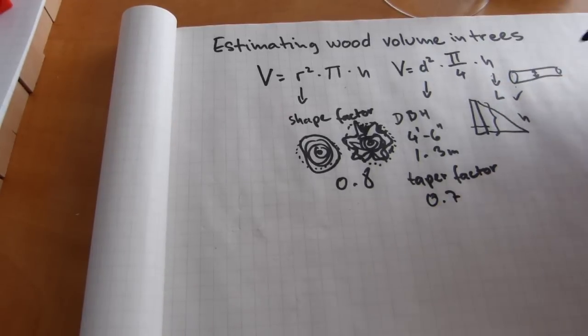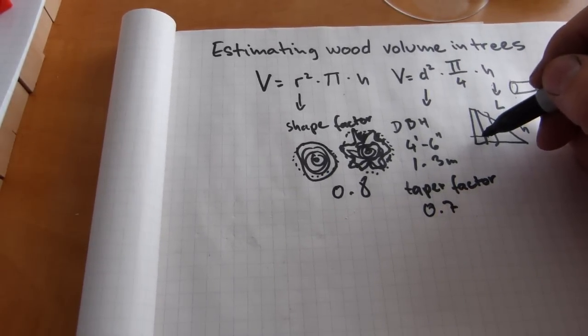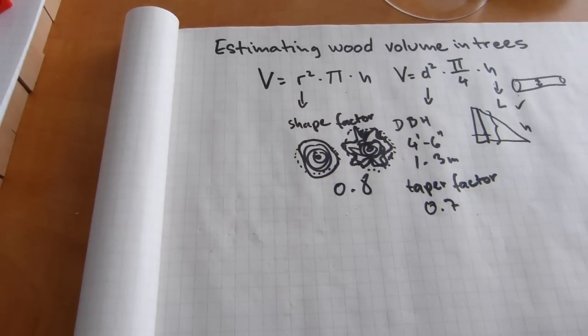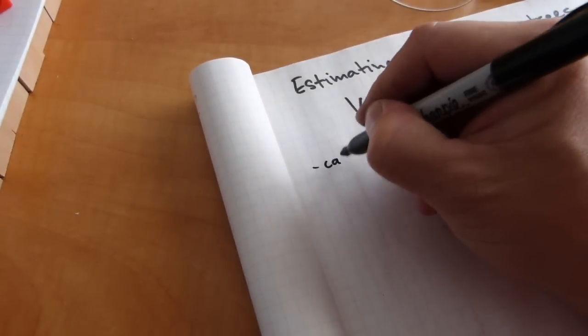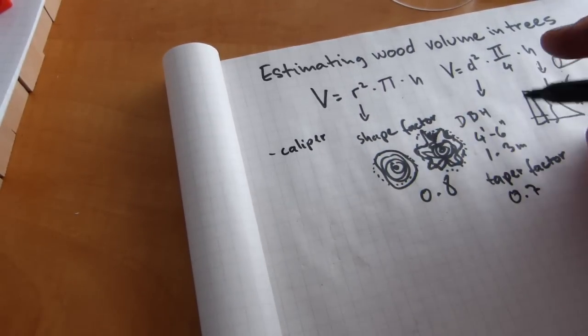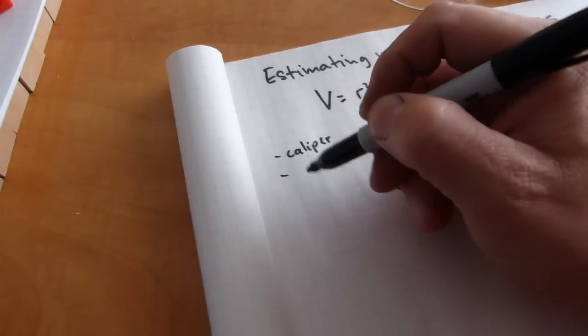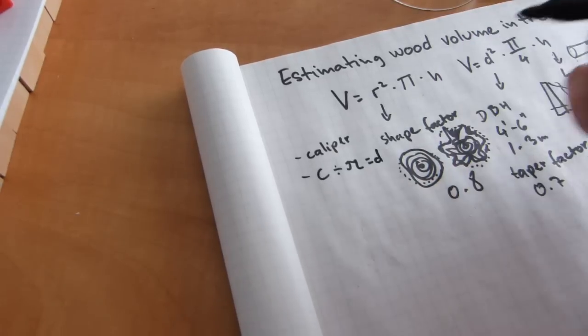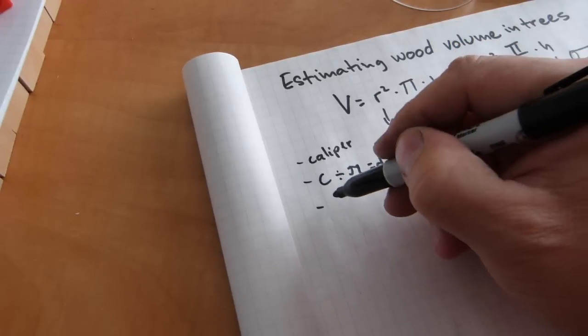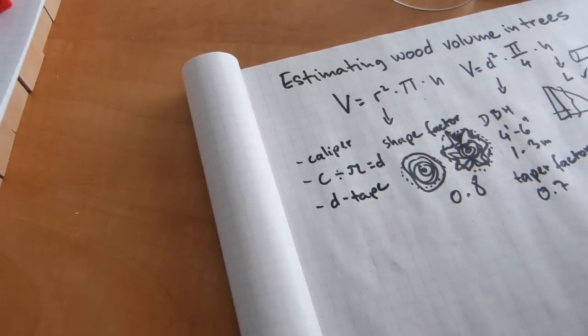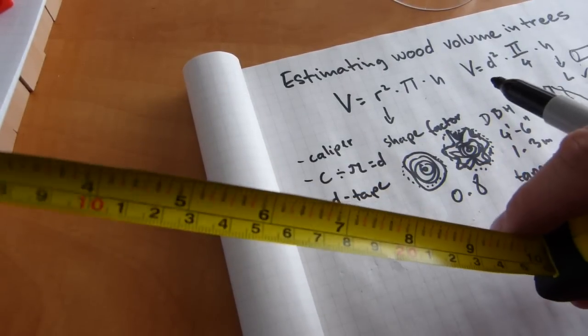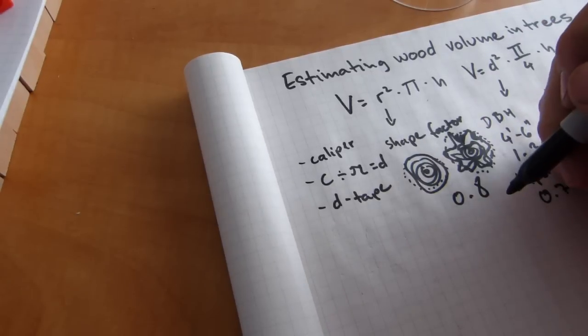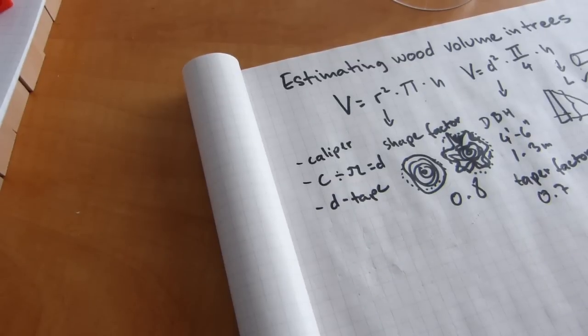Once you have your measurement taken, either midpoint at the log or at DBH, and you figure out your shape factor and taper factor, then there is the issue of measuring actual diameter. You can have a huge caliper, good luck carrying it around, a huge caliper that hugs the tree and measures the width of the tree. Or you can measure circumference and divide your circumference measurement by pi, and you're going to get diameter out of it. Or you can measure diameter with a diameter tape. A tape measure that instead of normal inches or centimeters, it's calibrated in a way that when you hug the tree and measure around it, it's going to get you the diameter right away instead of the circumference.